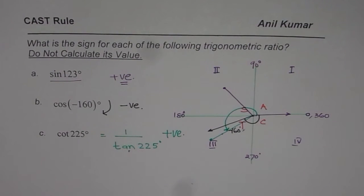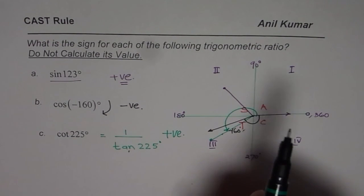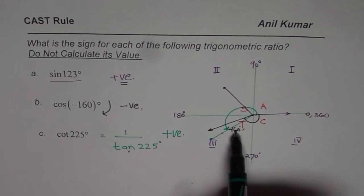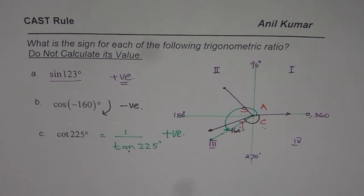Remember, in these 4 quadrants, all are positive in quadrant 1 and in quadrant 2, 3 and 4, sine, tan and cosine are respectively positive, as we see from the CAST rule. Thank you.